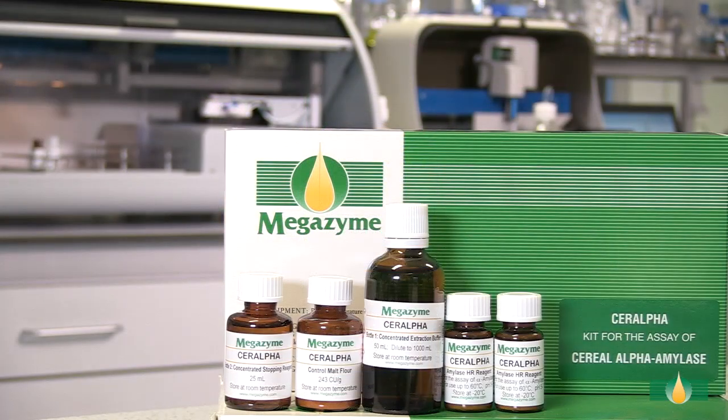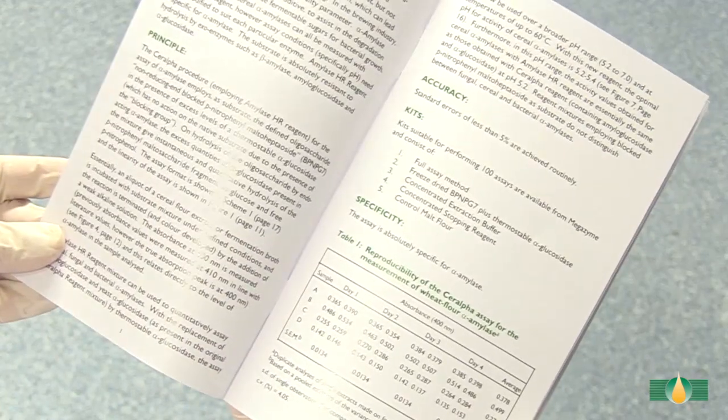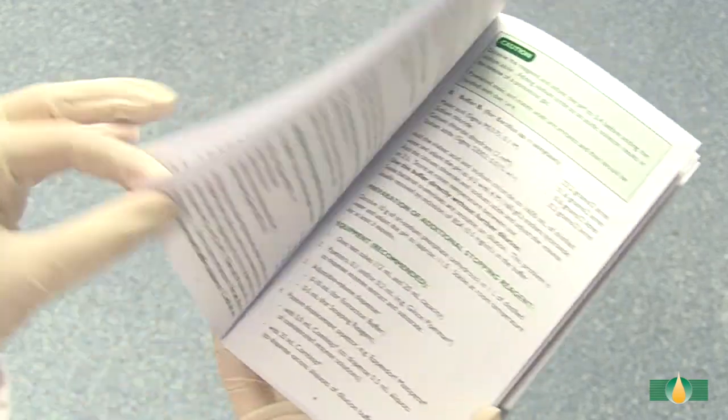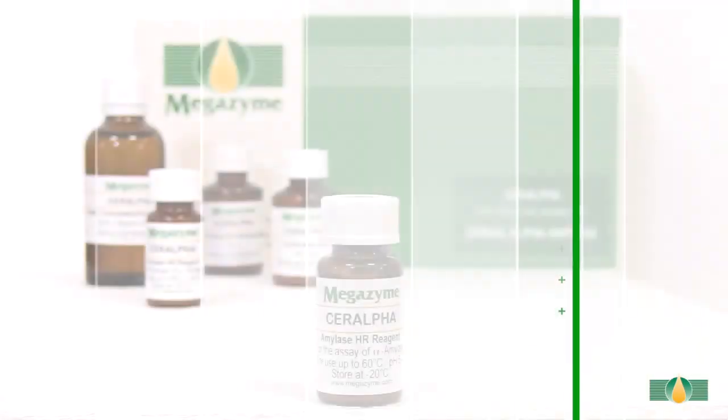The alpha-amylase assay kit is supplied with the kit reagents and the kit data booklet. Prior to performing the automated assay, the kit components and sample extracts should be prepared as described in the kit data booklet.